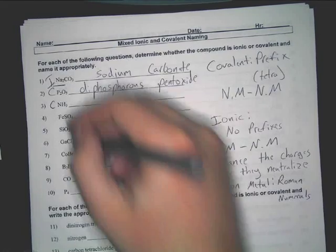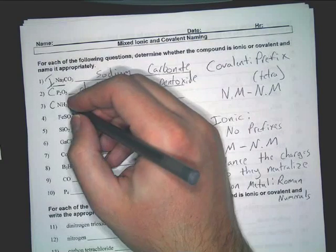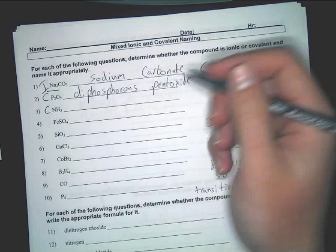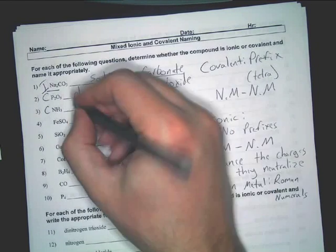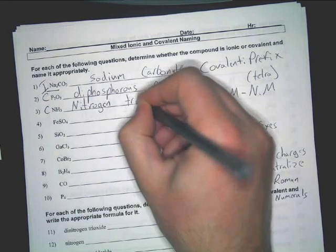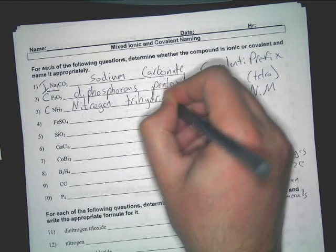So, it's covalent. Non-metal, non-metal. Now, the only thing that you need to remember, since we only have one nitrogen to begin with, we don't write mononitrogen trihydride. We just write nitrogen trihydride. Simple as that.